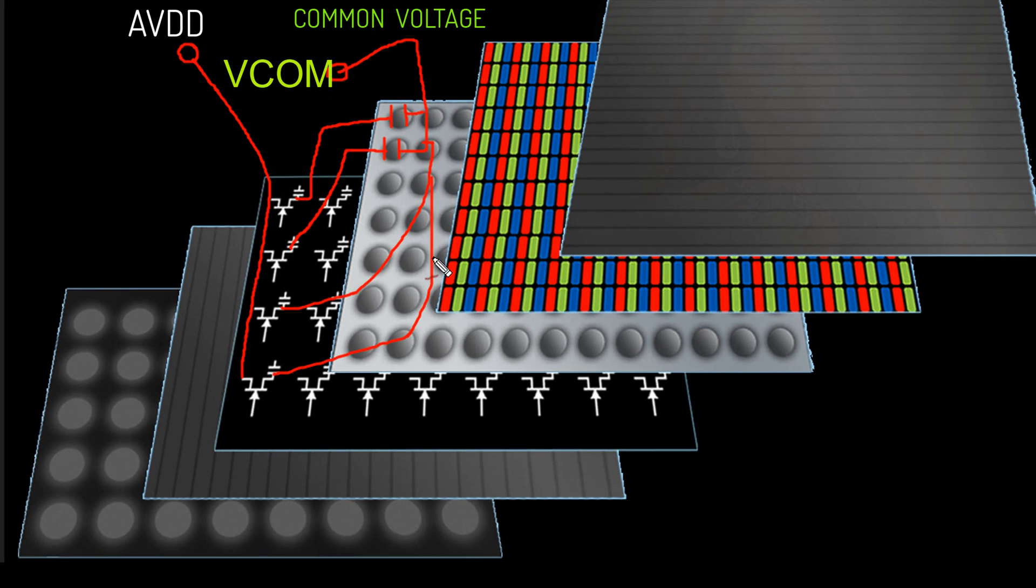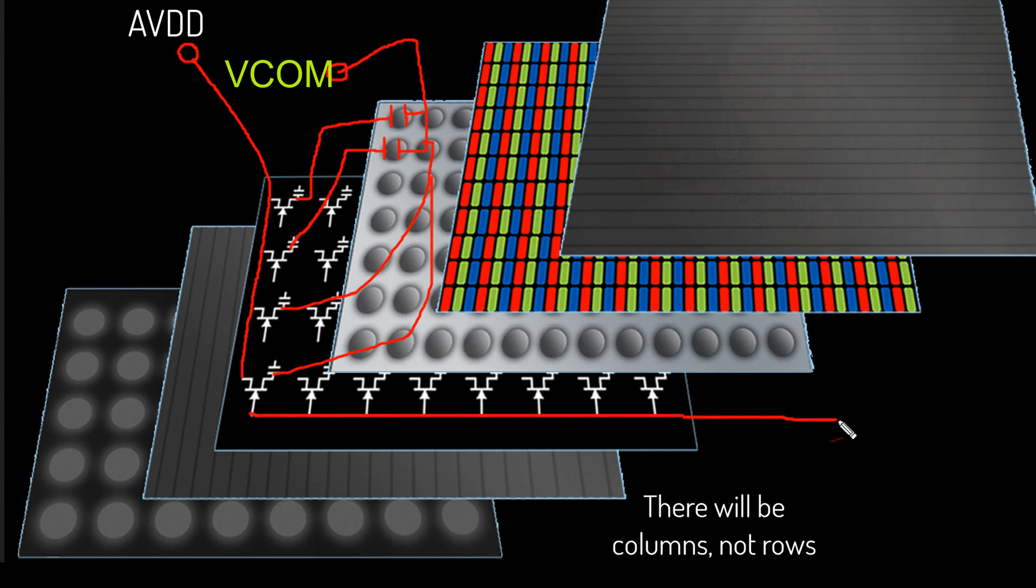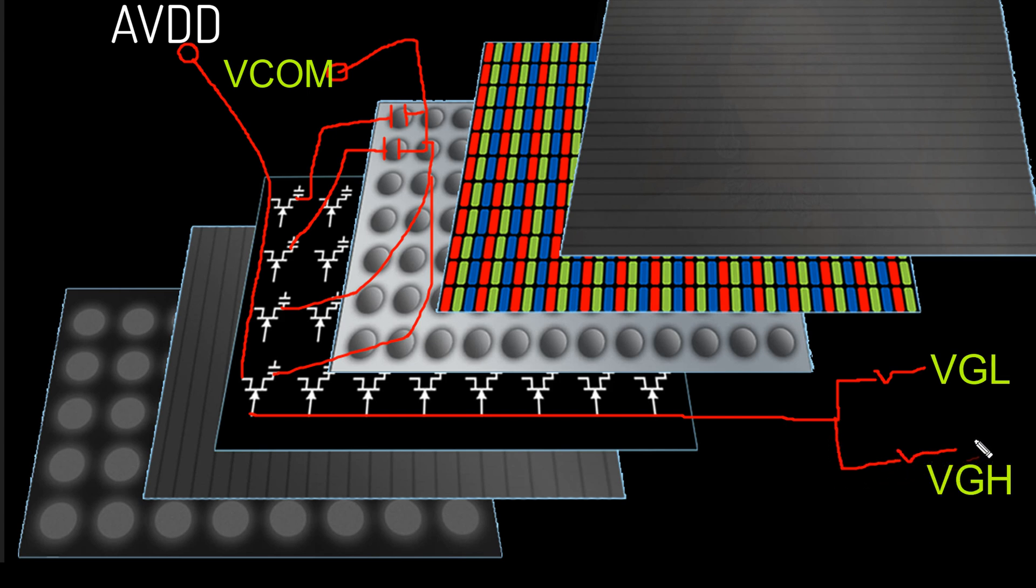Now look here, the gate terminals of the transistor in each row of the display are connected to the VGL and VGIS output circuit of the gate cop.